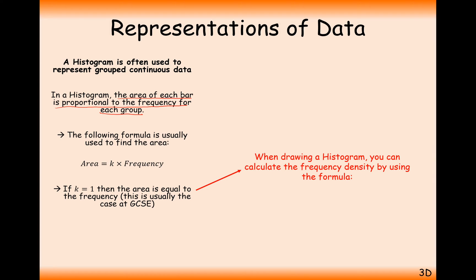So when drawing a histogram you can calculate the frequency by using the formula frequency density, which is what we're going to use on our y-axis, equals frequency divided by class width. So this is going to be how it's different from a normal bar chart in that bar charts would usually have frequency along the y-axis. Frequency density in this case for a histogram is going to be on the y-axis instead.